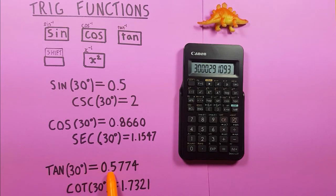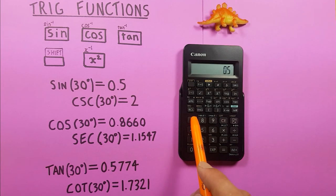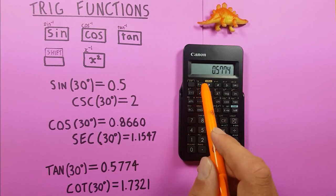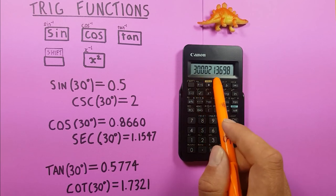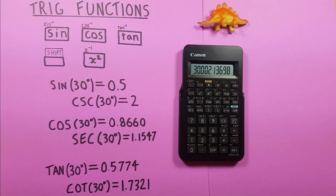And for tangent the same thing. This one gave us 0.5774 so we go shift tan and again we get what would round to 30 degrees.